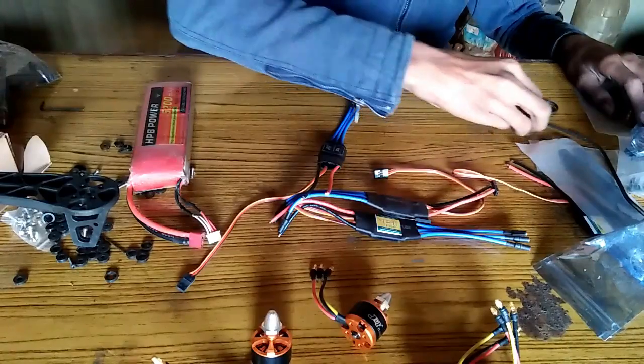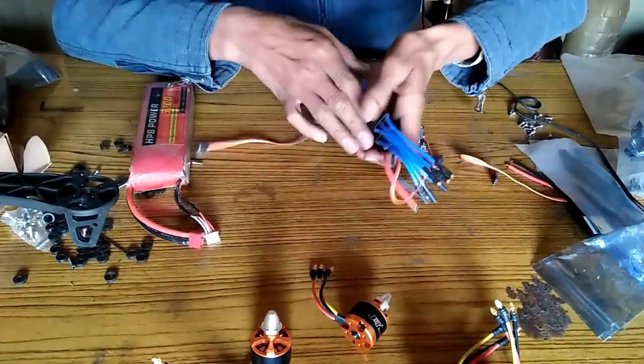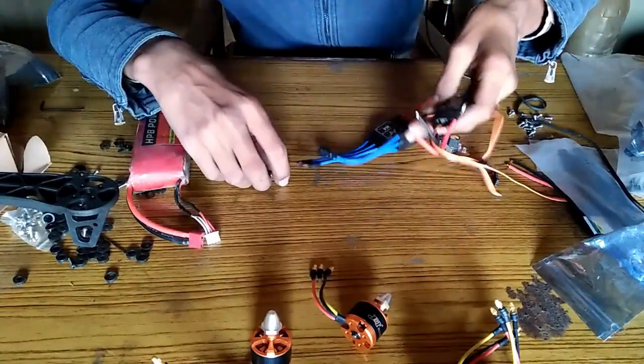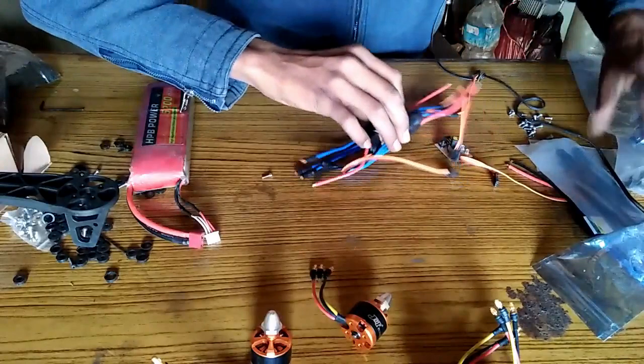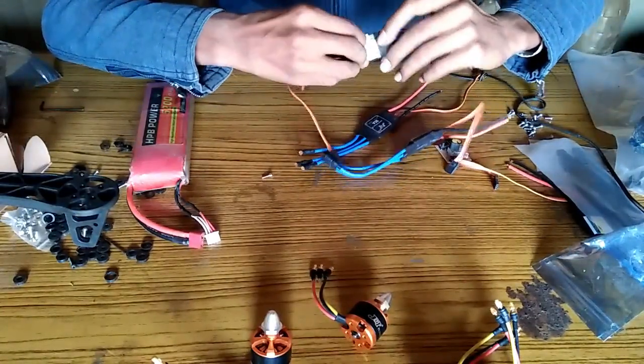In any quadcopter, two of the motors are clockwise and two are anti-clockwise. So we need two ESCs that run the motor in the clockwise and two ESCs that run the motor in the anti-clockwise.